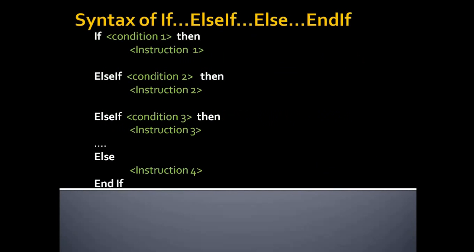Let's see the syntax of the if-else if-else-endif statement. First the compiler checks condition 1. If it is true, it executes instruction 1 and comes out of the statement. Otherwise it checks condition 2. If it is true, it executes instruction 2 and comes out of the entire if-else if-else-endif statement. Then it checks condition 3. If it is true, it executes instruction 3 and comes out. If none of the conditions are true, then finally it executes instruction 4 and comes out of the statement.